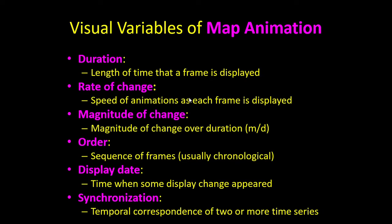Order, or the sequence of frames, is usually chronological, though you might reverse it or reorder to emphasize certain things — though that can create confusion. Display date is essentially the time when something happened that caused a change, whether by decade, year, or specific date. Synchronization is when you have two or more time series and want to link them up, so that January is January on both and July is July on both — for example, syncing vegetation and precipitation maps.